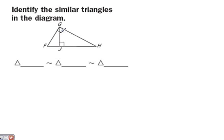Here we have a right triangle with an altitude drawn, and we need to identify the similar triangles. Remember that all their parts have to be in corresponding order, so this can get a little tricky because they're all oriented differently. This is how I like to do it — if it works for you, great; if you have your own method, fine by me too.